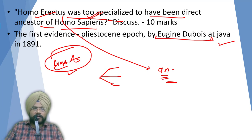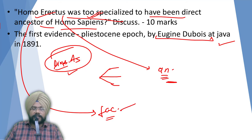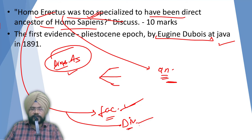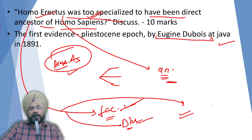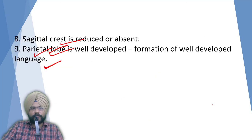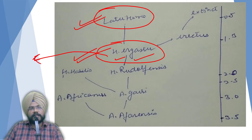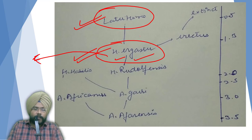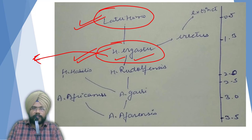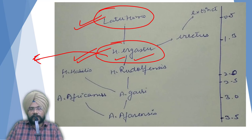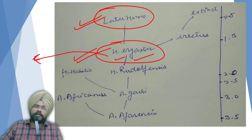How to structure this answer: first, give some factors showing Homo erectus could be our ancestor; then present the divergent factors given by Leakey; then conclude with Homo ergaster. Leakey has also accepted that Homo ergaster can be the precursor or ancestor of the later Homos. This is the latest viewpoint.